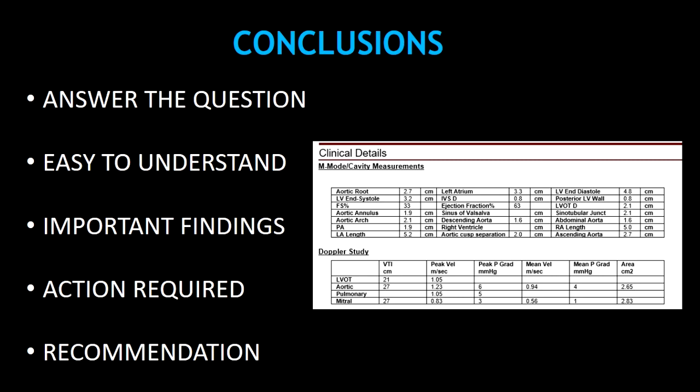And finally, the conclusions. The most important thing in the conclusions is answering the question. If the echo was indicated to assess the pulmonary pressures, you have to put this information in the conclusions. All this information has to be easy to understand and should include all the important findings. Exclude non-significant findings in this section, like any mild regurgitations or any mild thickening of the valves. If any urgent action is required, you can write this in the conclusions — for example, patient needs urgent cardiology referral. And also, you can make any recommendations here, like if you find an aneurysmal interatrial septum, you can recommend to perform an echo bubble study.